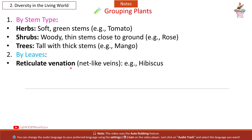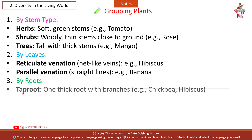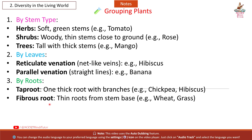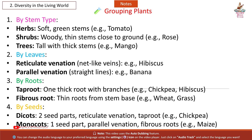Grouping by leaves: Reticulate venation has net-like veins — example: hibiscus. Parallel venation has straight lines — example: banana. Grouping by roots: Tap root has one thick root with branches — example: chickpea, hibiscus. Fibrous root has thin roots from stem base — example: wheat, grass. Grouping by seeds: Dicots have two seed parts, reticulate venation, and tap root — example: chickpea. Monocots have one seed part, parallel venation, and fibrous roots — example: maize.